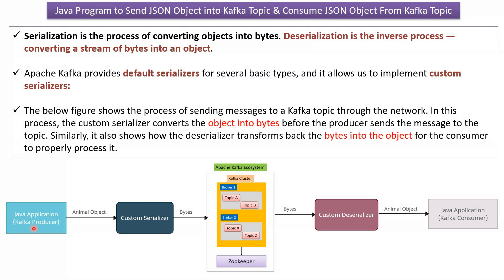Here you can see the Kafka producer Java application which publishes an animal object to a Kafka topic. Before the animal object is published to the Kafka topic, this custom serializer converts the animal object to bytes. So the bytes will be published to the Kafka topic.